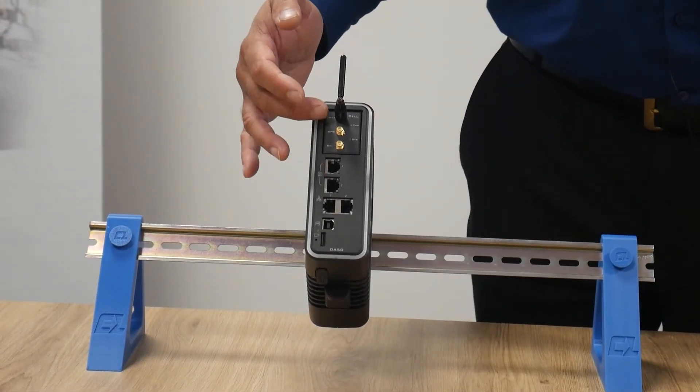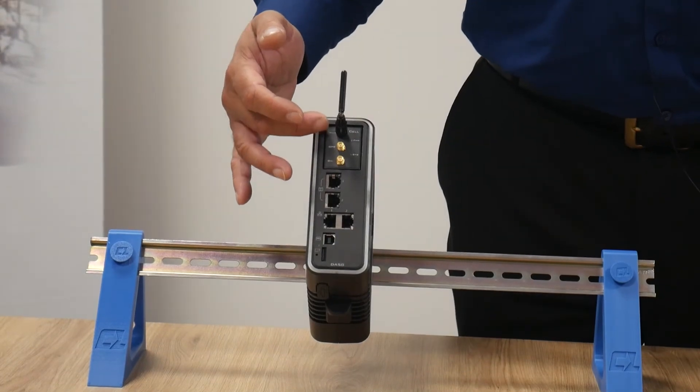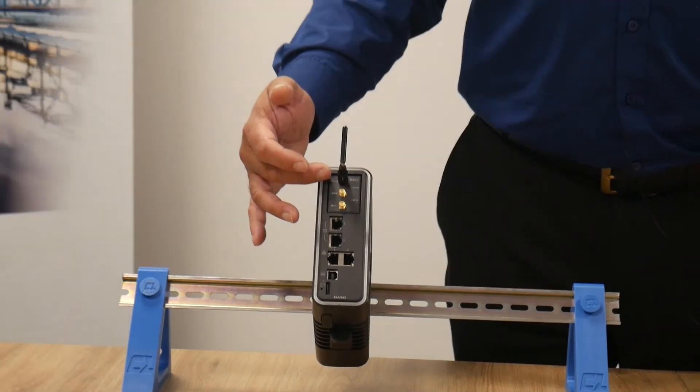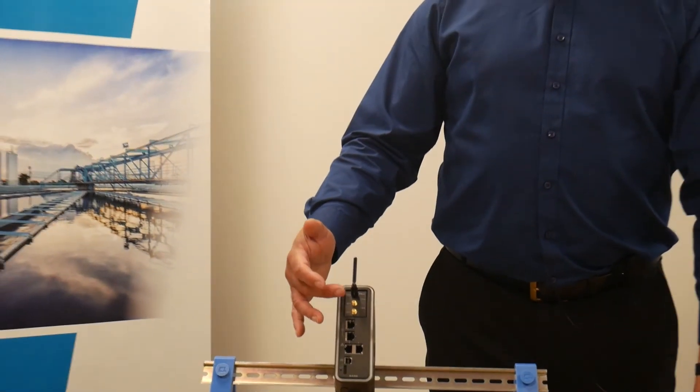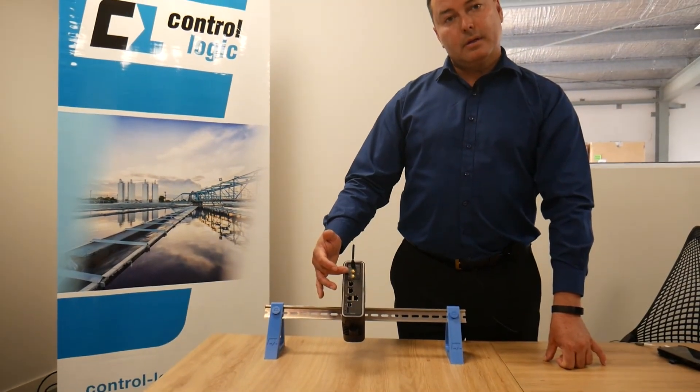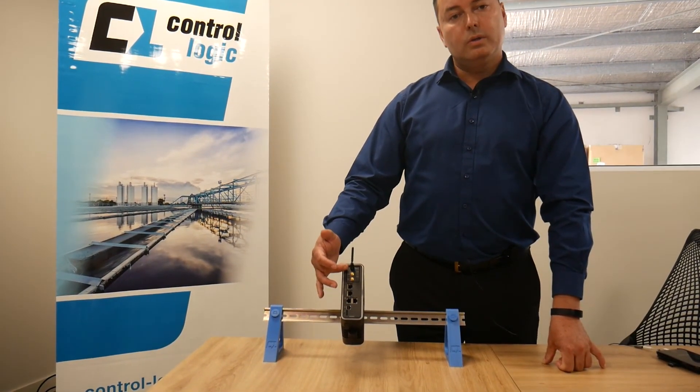If you remove this you can replace it with an additional module which is a Wi-Fi module. It can be replaced with two serial ports or two Ethernet ports.